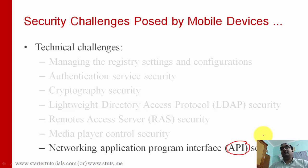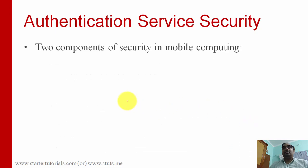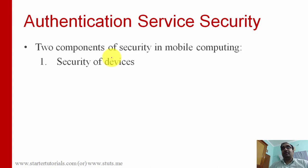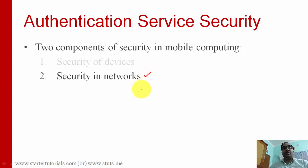We are going to discuss authentication service security. The two components associated with it are: first, security of the devices themselves — mobiles and other devices — and second, security in networks. We use devices to access organizational servers through the network, so the network must also be secured.